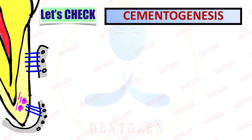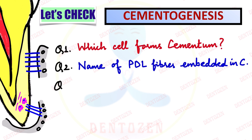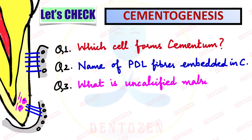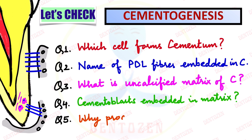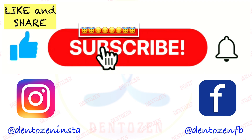Let's check what you've learned: Which cell forms cementum? What are the embedded ends of PDL fibers called? What is the uncalcified matrix of cementum known as? What are cementoblasts called when they get embedded inside the matrix? Why are the processes of cementocytes always directed towards the periodontal ligament? That's all for this video. If you enjoyed it, tap the like button, share with your friends, keep watching, keep learning, keep smiling, and good luck for your exam. The next video will be on the types of cementum.